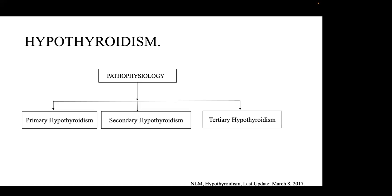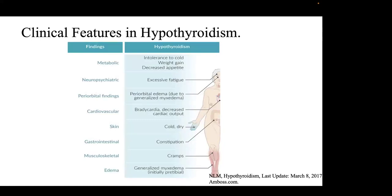Hypothyroidism can be divided into primary, secondary, and tertiary. The predominant cause of primary hypothyroidism is nutritional insufficiency. Other causes include Hashimoto's thyroiditis, postpartum thyroiditis, De Quervain's thyroiditis, and thyroid dysplasia occurring during embryological development. Secondary hypothyroidism involves pituitary disorders such as pituitary adenoma causing TSH deficiency. Tertiary hypothyroidism involves hypothalamic disorders associated with TRH deficiency.